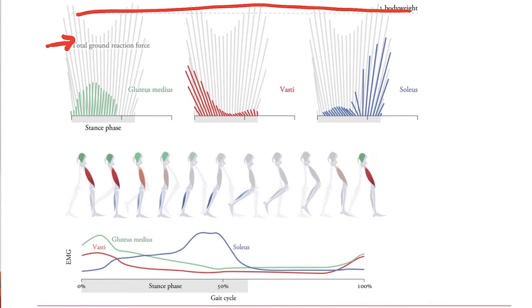And gluteus medius, again shown in green here, is contributing to vertical ground reaction force during most of the stance phase. That's what it does. It provides body weight support and is essential for body weight support.